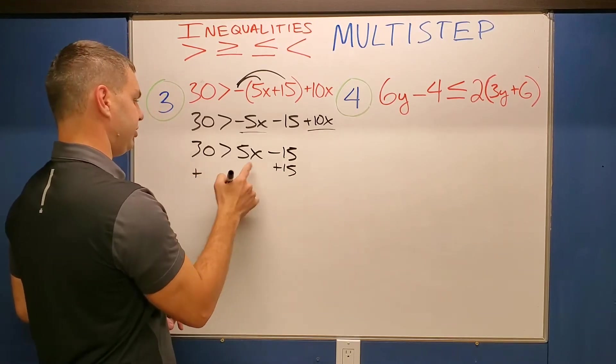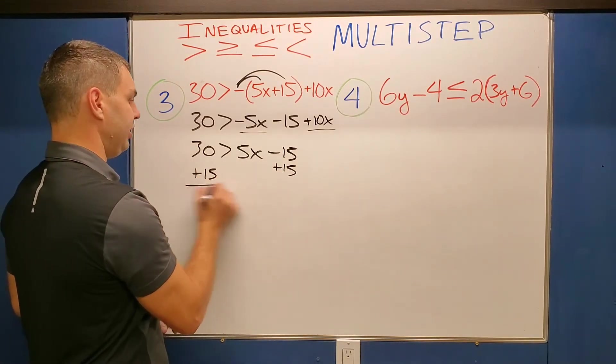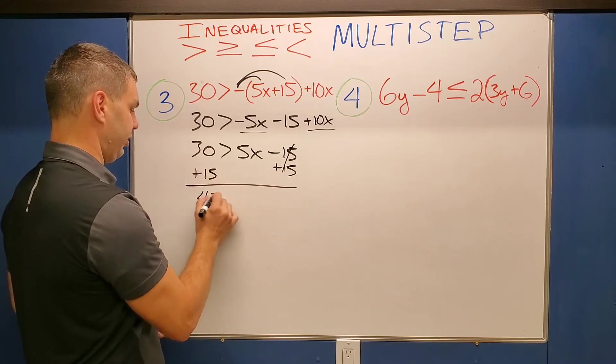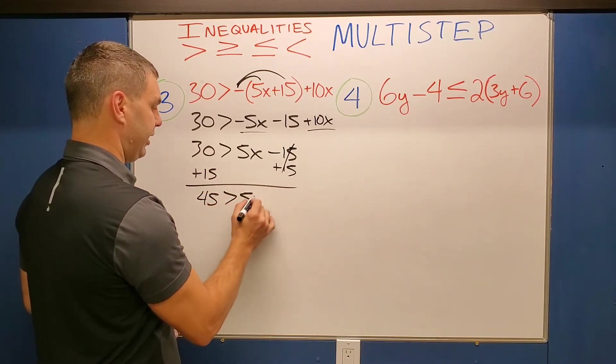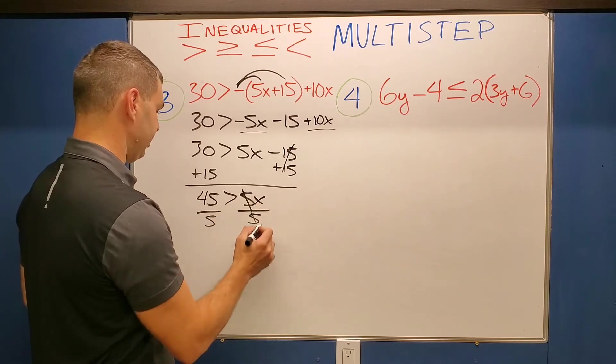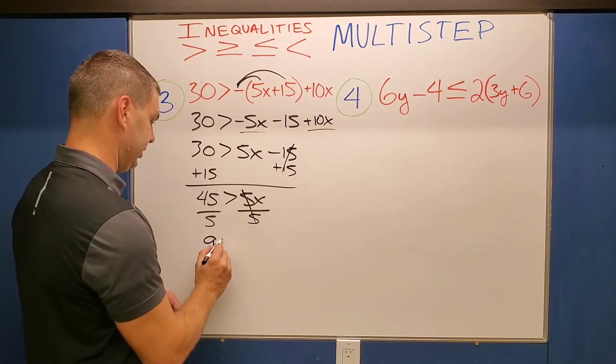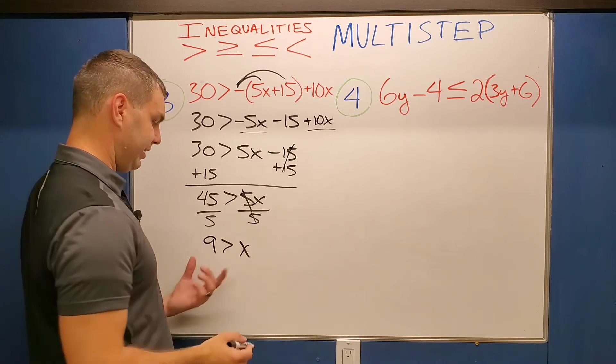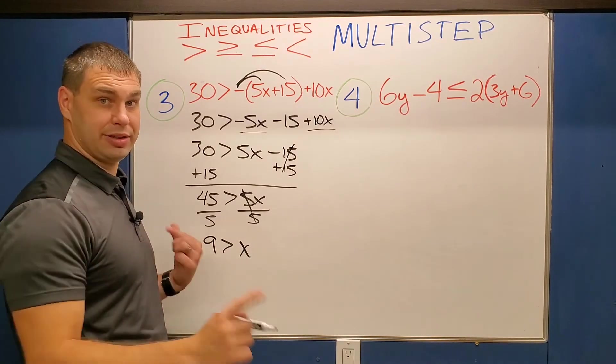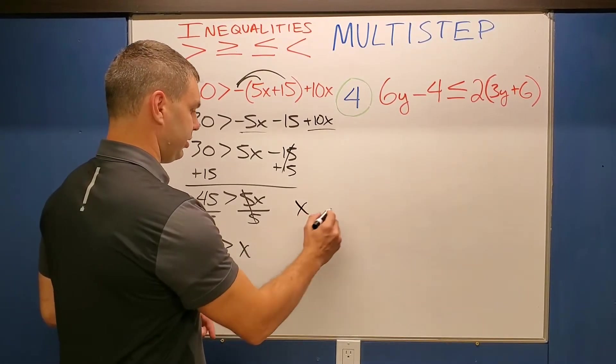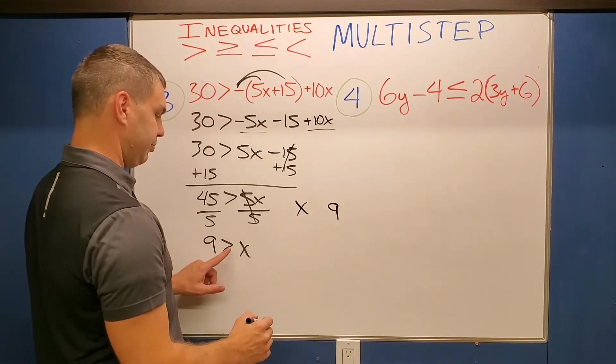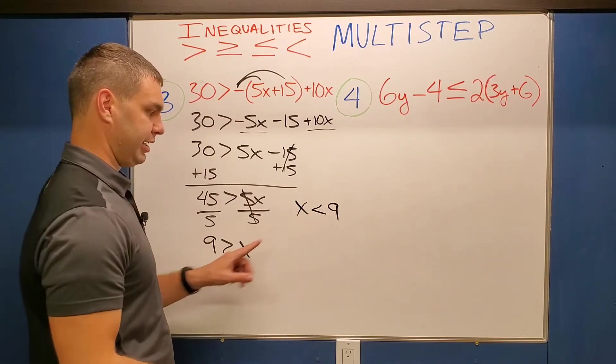Add the 15 to the other side. Trying to get our x term isolated. And 30 plus 15 over here is 45 is greater than 5x. So when I divide by 5, let's see, 45 divided by 5 is 9. So we have 9 is greater than x. Again, this isn't quite written how I want. I want the x first. So we're going to flip those around the x and then the 9. It's pointed at the x. Keep it pointed at the x when you write it first.